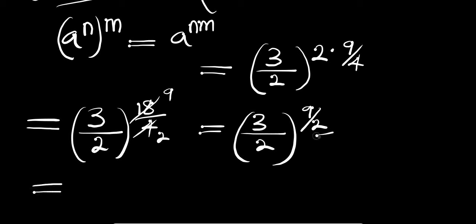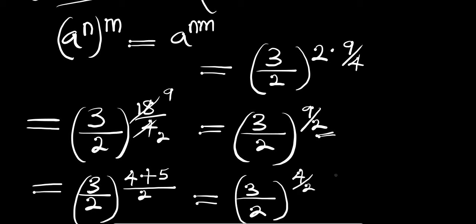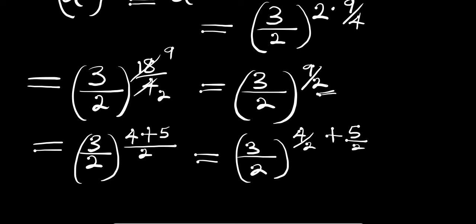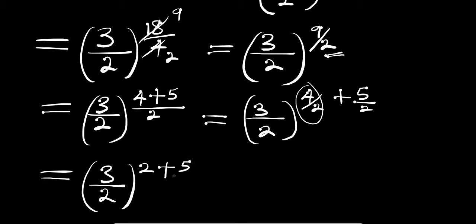We can rewrite 9 divided by 2 as the sum 4 plus 5 divided by 2. So we are going to have 3 divided by 2 all to the power of 4 plus 5 divided by 2. This simply means we can rewrite this as 3 divided by 2 all to the power of 4 divided by 2 plus 5 divided by 2. Now 4 divided by 2 is simply 2, so we have 3 divided by 2 all to the power of 2 plus 5 divided by 2.